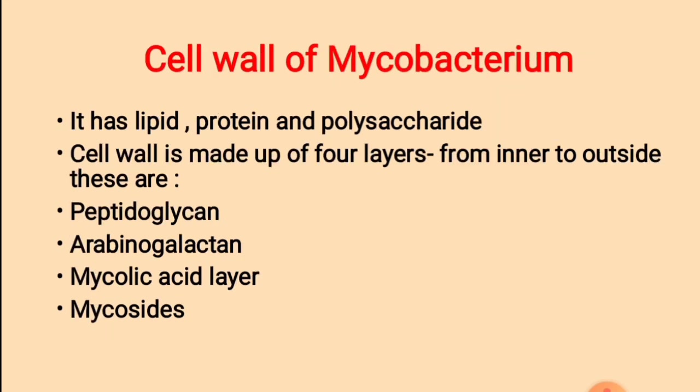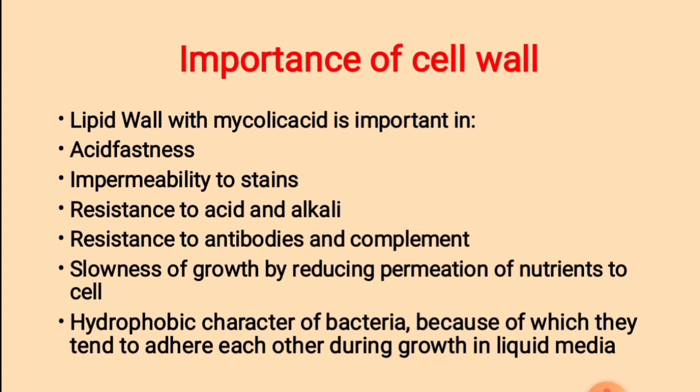Cell wall of Mycobacterium tuberculosis — this is very important. It has lipid, protein, and polysaccharide. The cell wall is made up of 4 layers from inner to outer: (1) peptidoglycan, (2) arabinogalactan, (3) mycolic acid layer, and (4) mycosides. The lipid wall with mycolic acid is an important property, conferring acid-fastness, impermeability to stains, resistance to acid and alcohol, resistance to antibodies and complement system, slowness of growth by reducing permeation of nutrients, and hydrophobic character causing bacteria to adhere to each other during growth in liquid media.